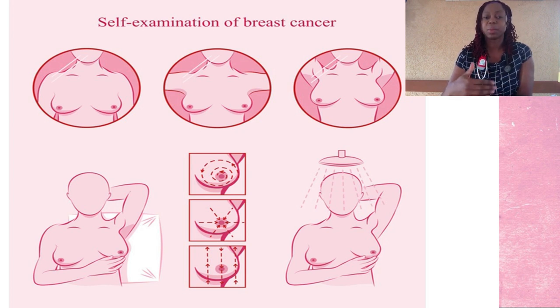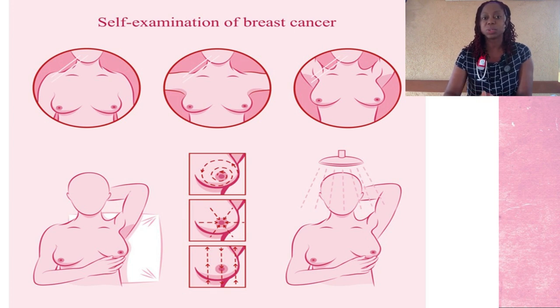Whenever you examine your breasts, use the same position and the same technique consistently so that you don't miss any changes. You can examine in a circular motion from outside going in towards the nipple, or start at the nipple and work your way to the outside. You can also go straight out and come back in, or go from top to bottom. Whatever technique you use, be consistent so that you will be sensitive to the smallest of changes. Also examine deep into the armpits for any swellings, and along the collarbone for any swellings. That can be a sign of an inflamed lymph node — in many cases there can be an enlarged lymph node in the armpit or by the collarbone without a lump being felt in the breast. Be careful to include those areas in your self-examination.